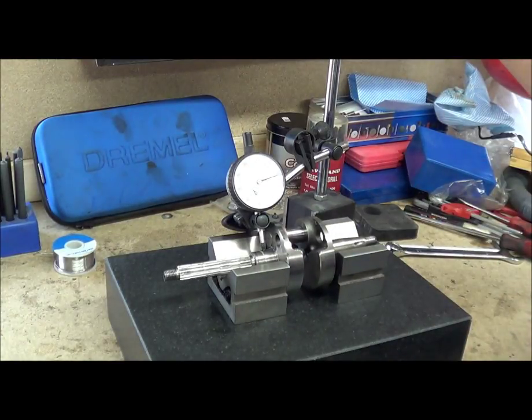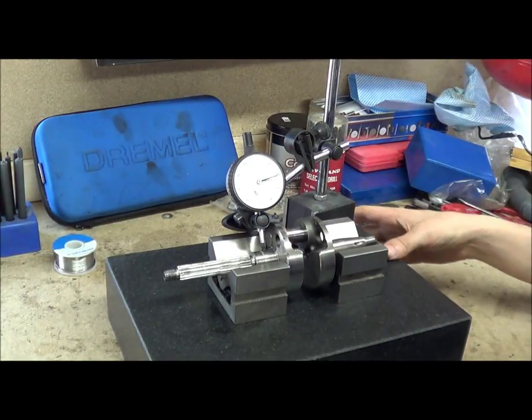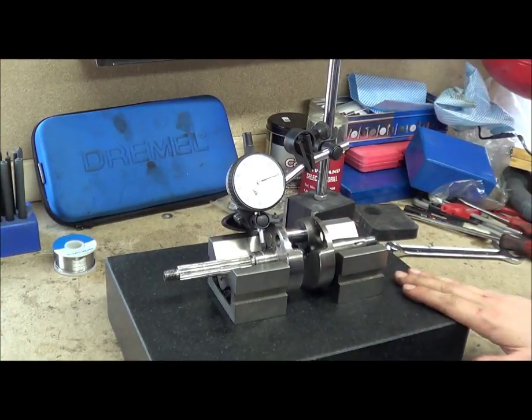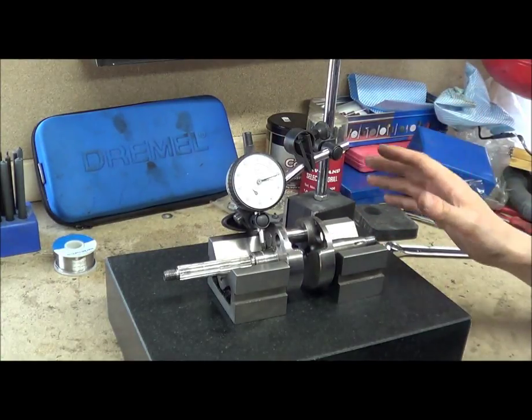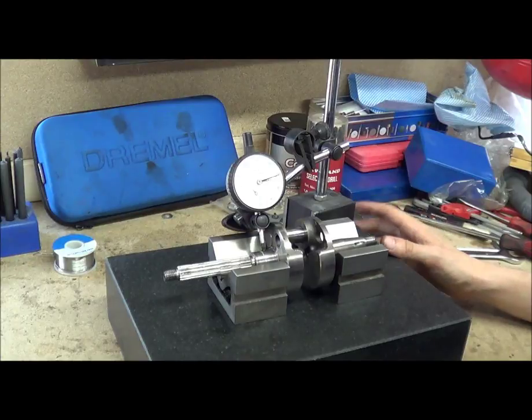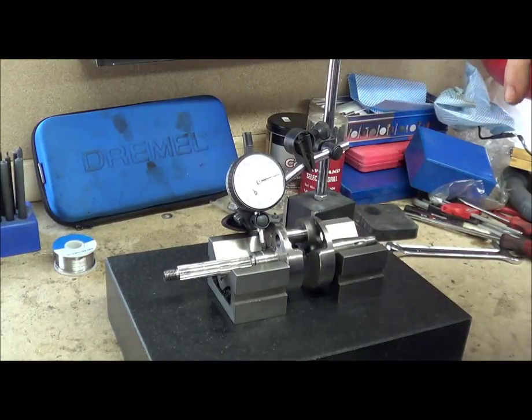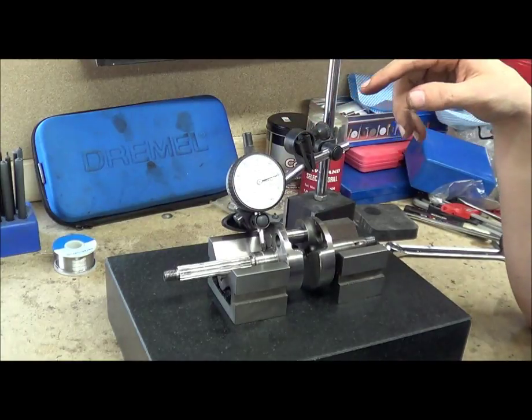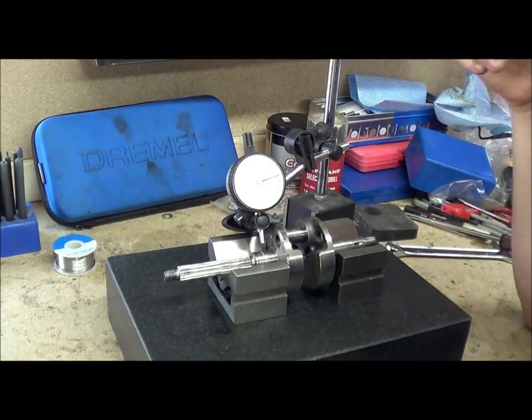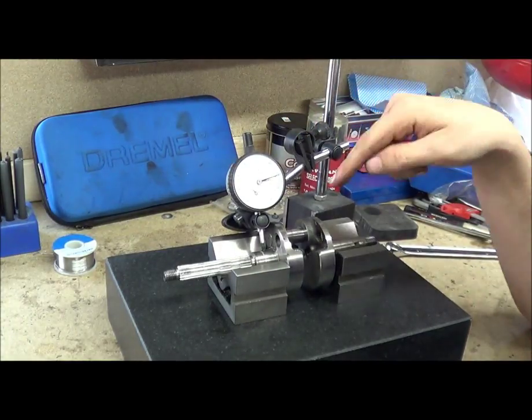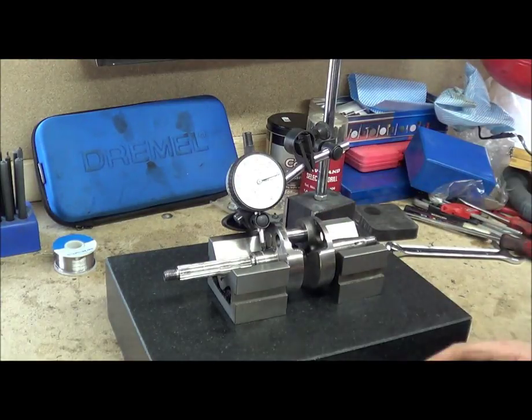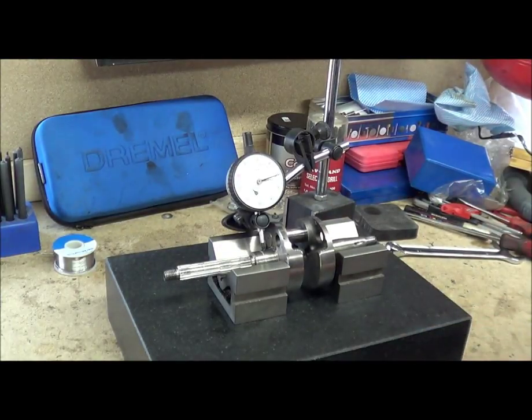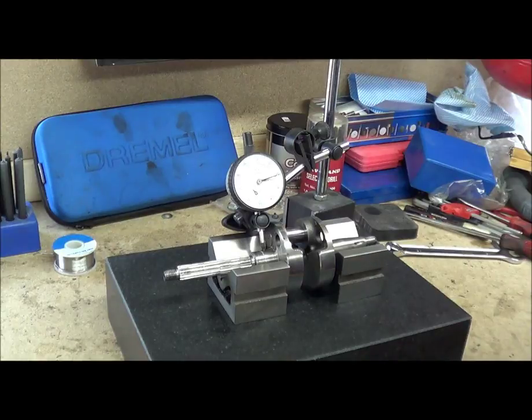So we've got a magnetic base which obviously isn't going to stick to the granite but it's got a nice flat surface. Then we've got a dial test indicator or a DTI or just a dial indicator, and I have a crankshaft that I split apart and removed the conrod to check the bearings and whatnot.